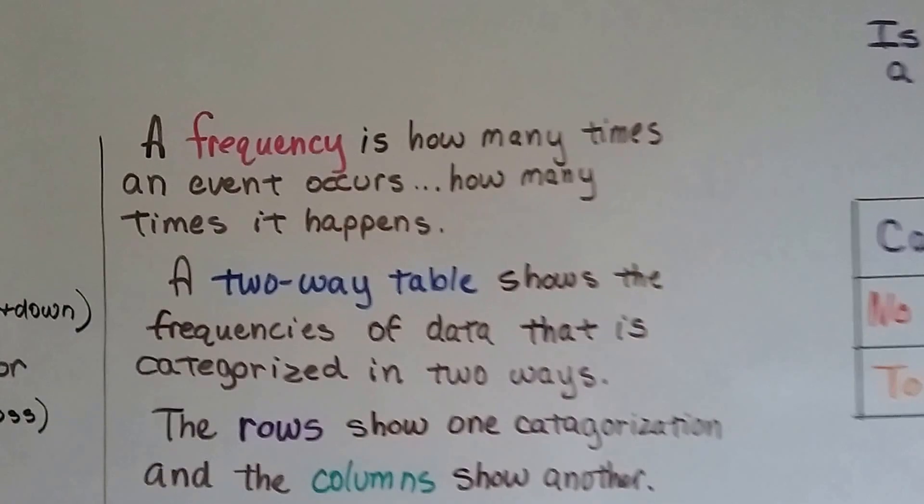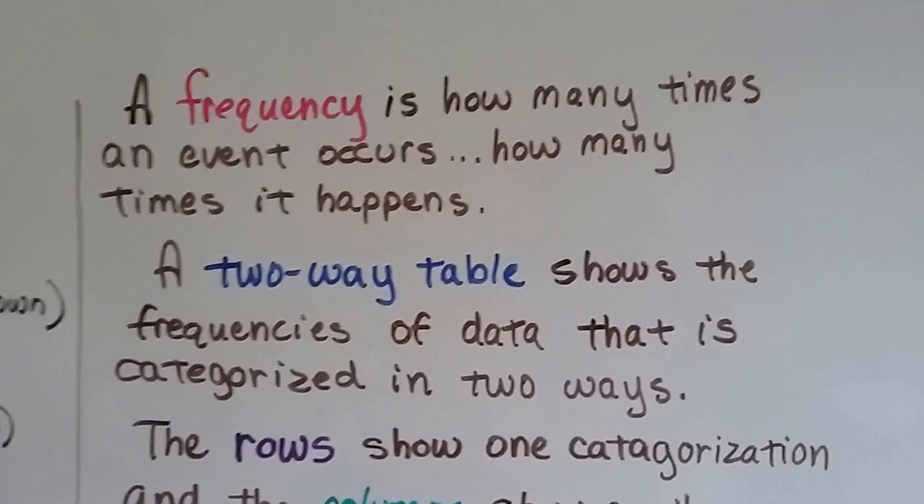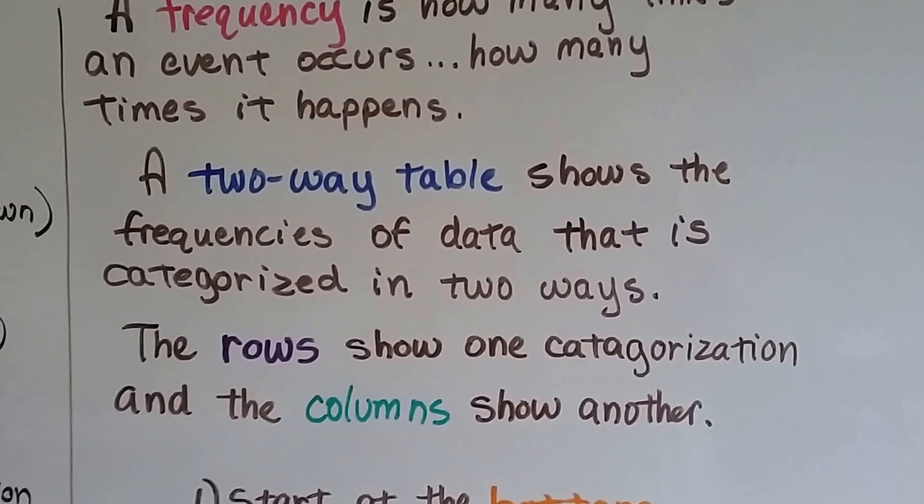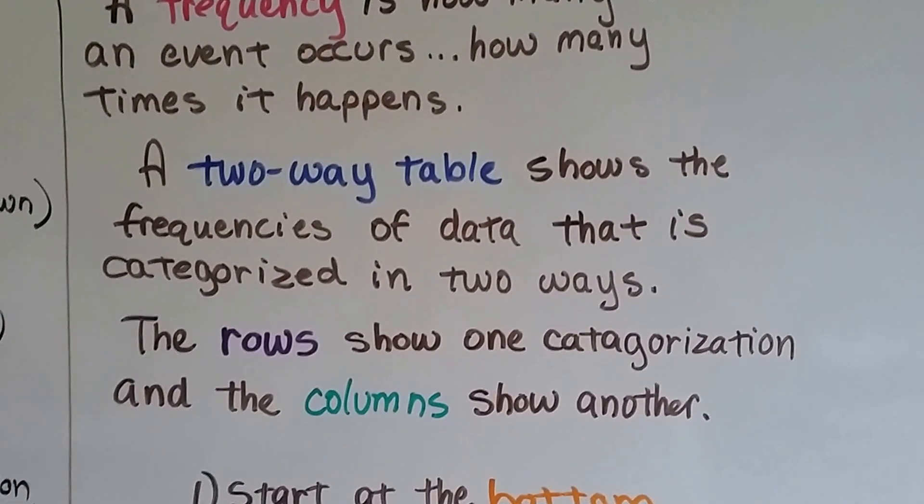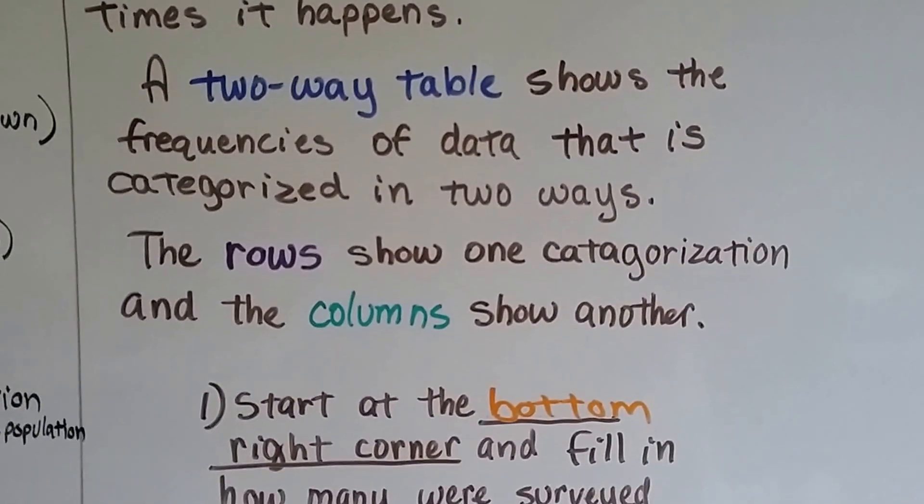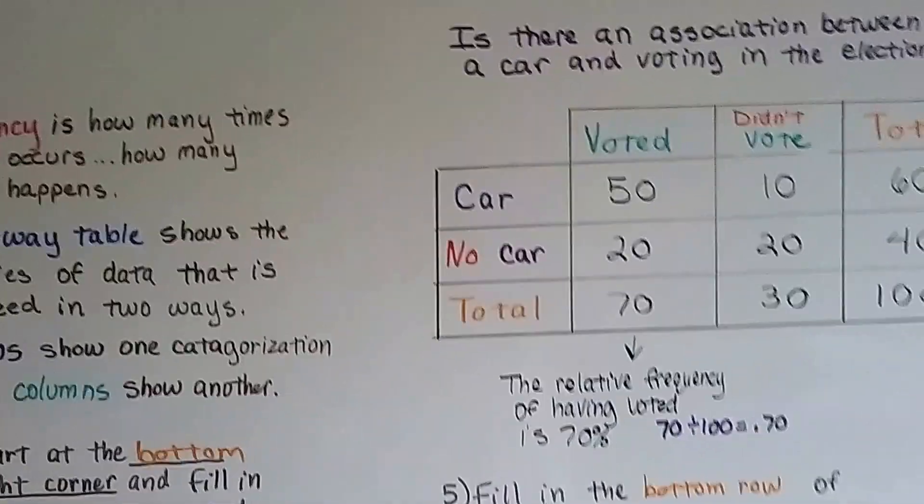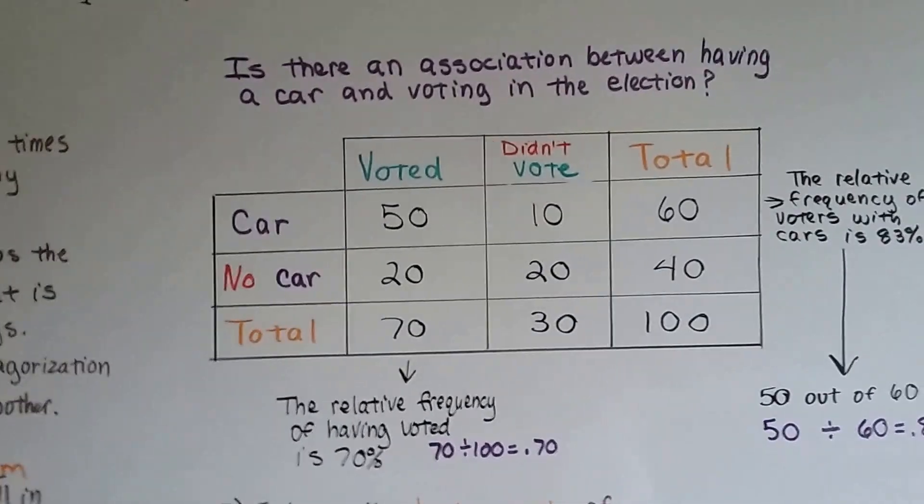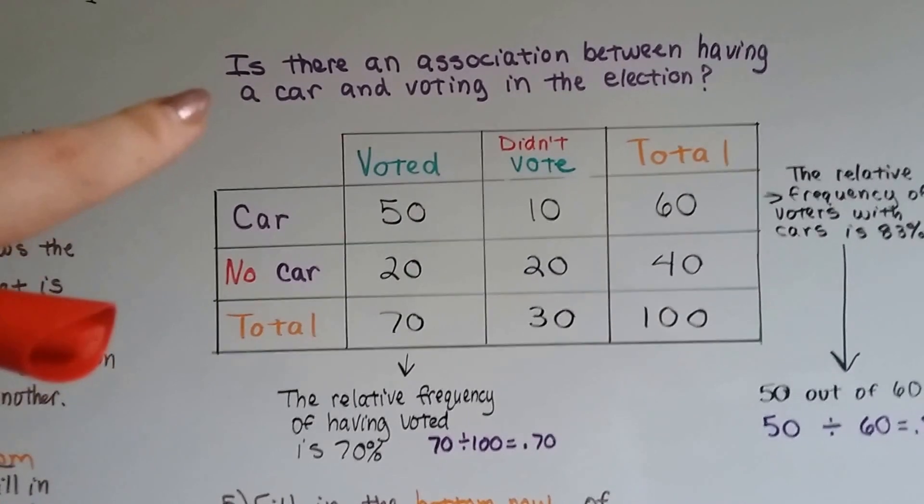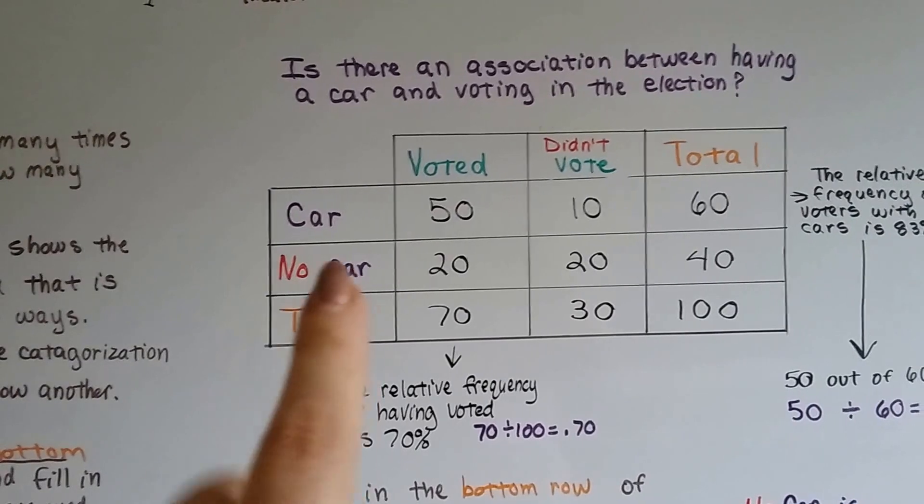A frequency is how many times an event occurs, how many times it happens. A two-way table shows the frequencies of the data that is categorized in two ways. The rows show one categorization, and the columns show another. What we're going to do is voting versus not voting and having a car versus not having a car, and we're going to see is there an association between having a car and voting in an election. We've got our table and we'll start with a blank table.